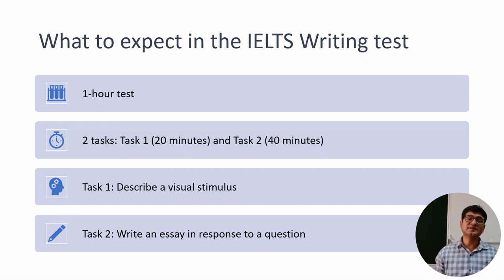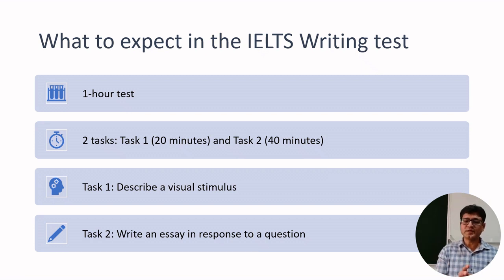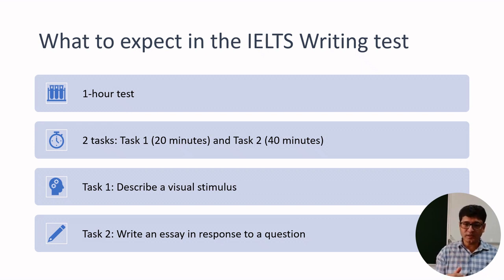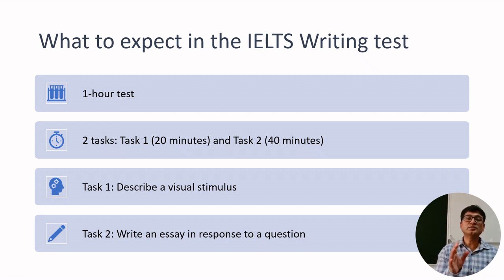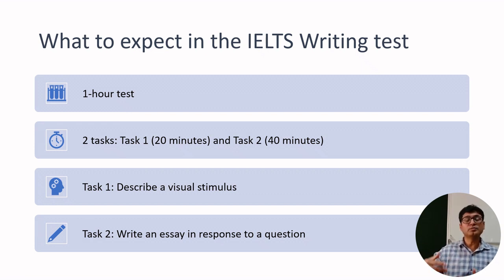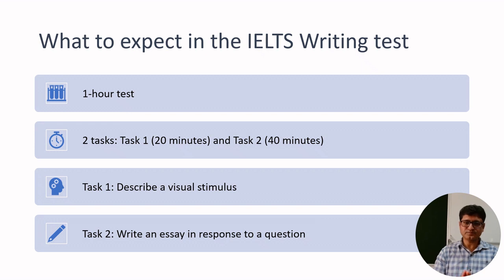Let's talk about what to expect in the IELTS writing test. It'll be a one-hour test — 60 minutes in total — with two tasks given to you: Task 1 is 20 minutes and Task 2 is 40 minutes. There won't be a clear distinction; you can take longer on one or the other, but I suggest you do not spend more time on Task 1, because there are more marks for Task 2. In Task 1 you write at least 150 words, whereas in Task 2 you write at least 250 words, so Task 2 has higher value.